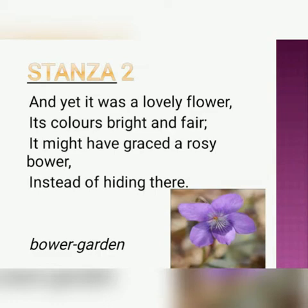Let me read it out once again: 'And yet it was a lovely flower, its colors bright and fair. It might have graced a rosy bower, instead of hiding there.' Our poetess Jane Taylor wants to say that although violet is a very beautiful flower, instead of showing off, it's hiding there.